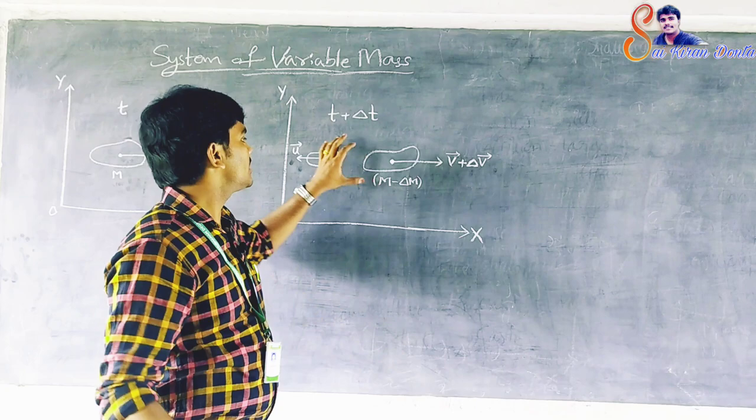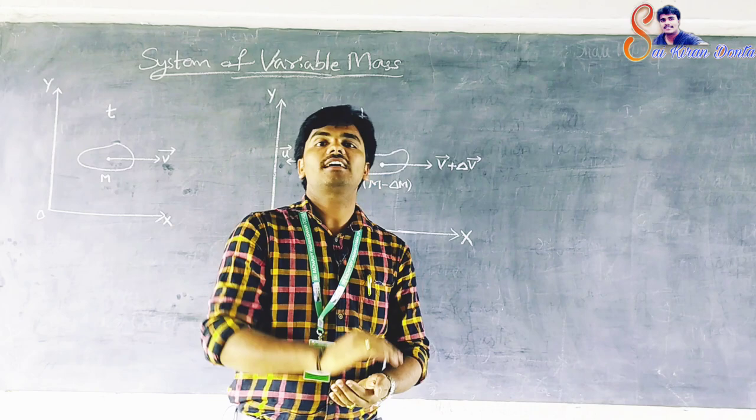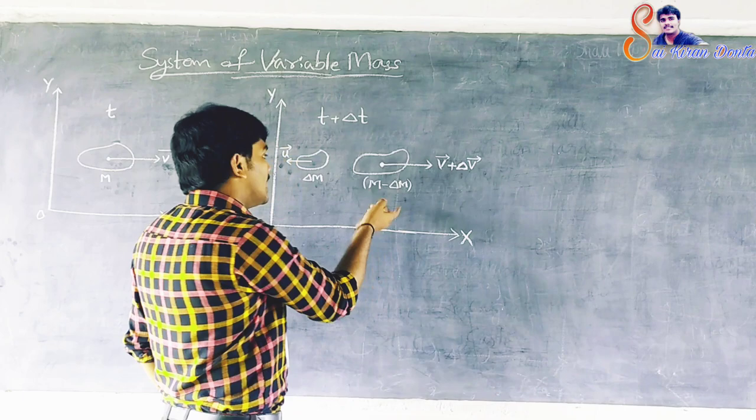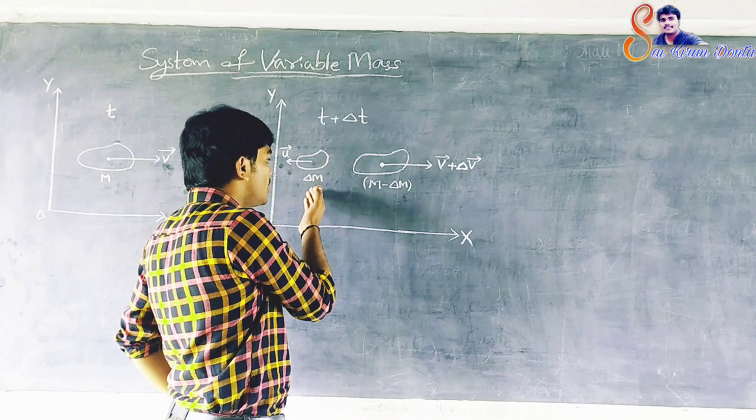This system represents motion like that of a rocket. Such kinds of problems may be solved by applying Newton's second law to the combination of two masses: the mass M minus delta M and the ejected mass delta M. Newton's second law cannot be applied separately to each mass alone.